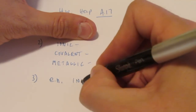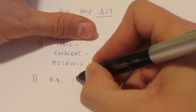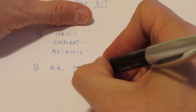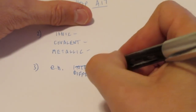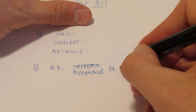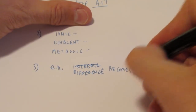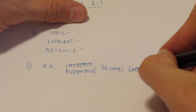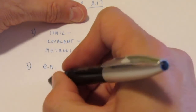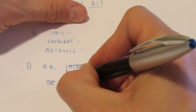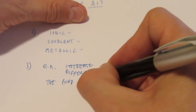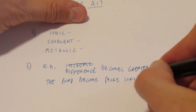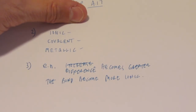The greater the difference, the greater the ionic character. So to answer question number three, electronegativity difference becomes greater. As electronegativity difference becomes greater, the bond becomes more ionic.